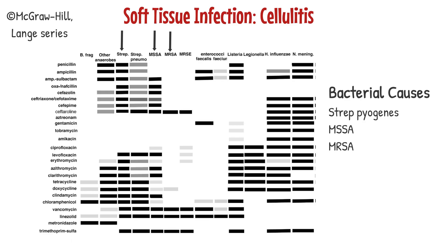Let's first look at the soft tissue infection cellulitis. This infection is primarily caused by three bacteria: group A strep or strep pyogenes, methicillin-sensitive staph aureus (MSSA), and methicillin-resistant staph aureus (MRSA), all of which can colonize the skin at sites of breakdown.